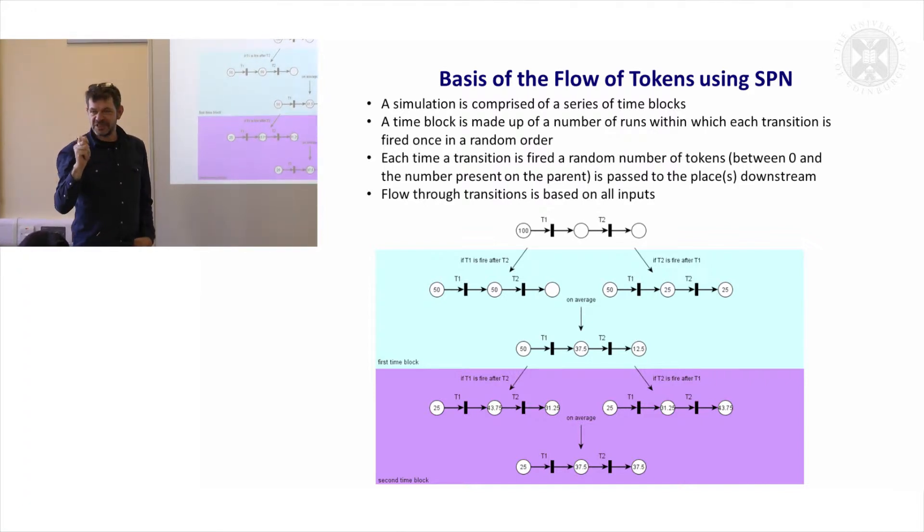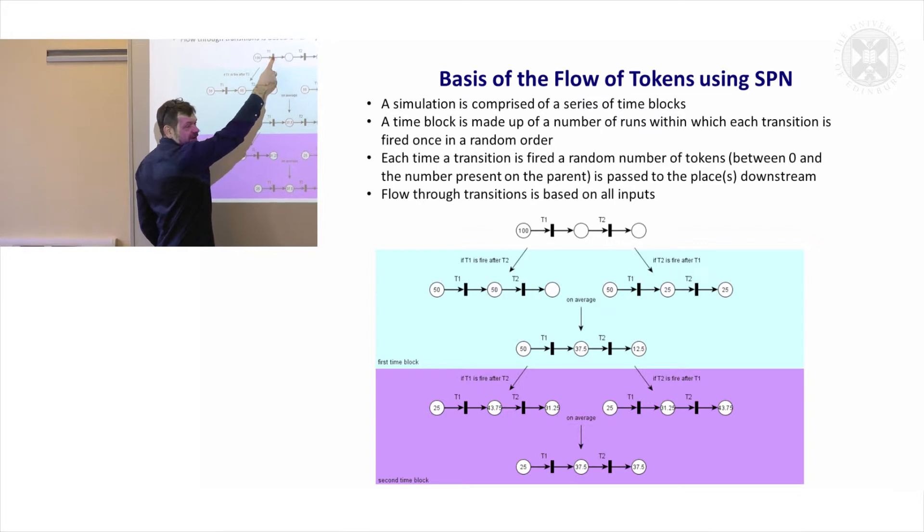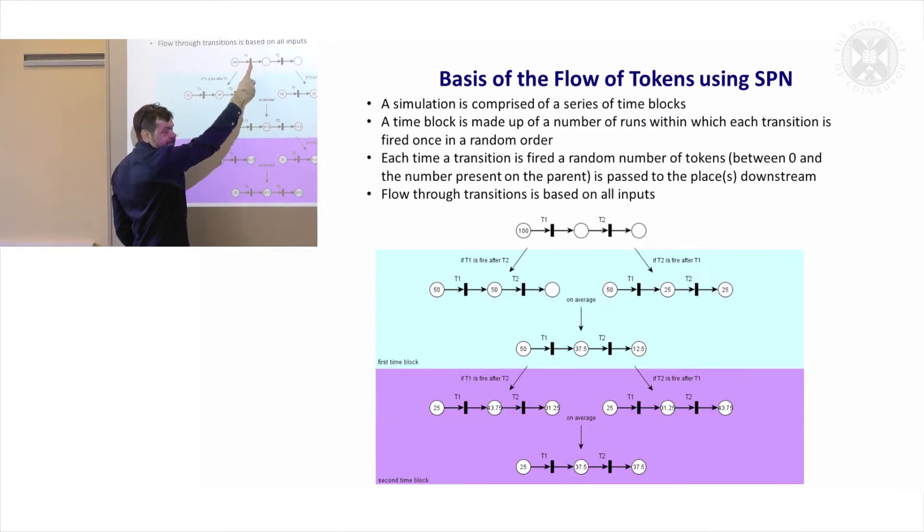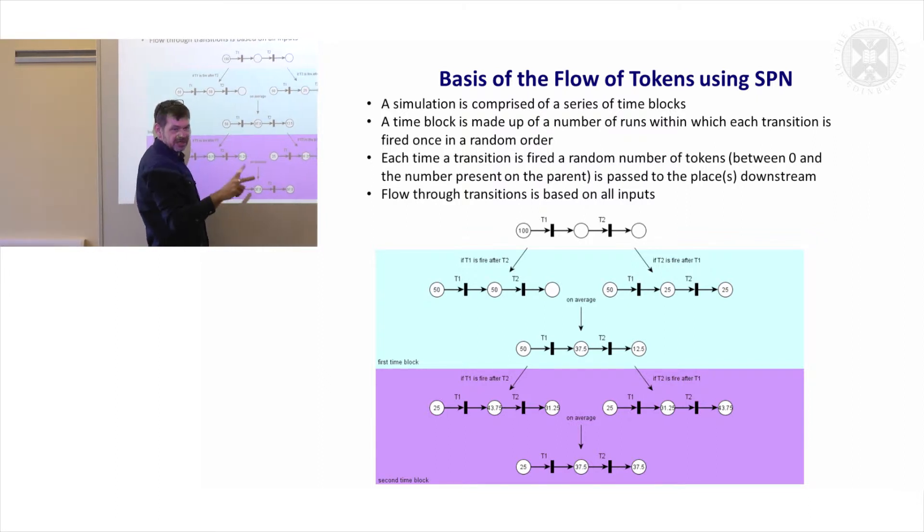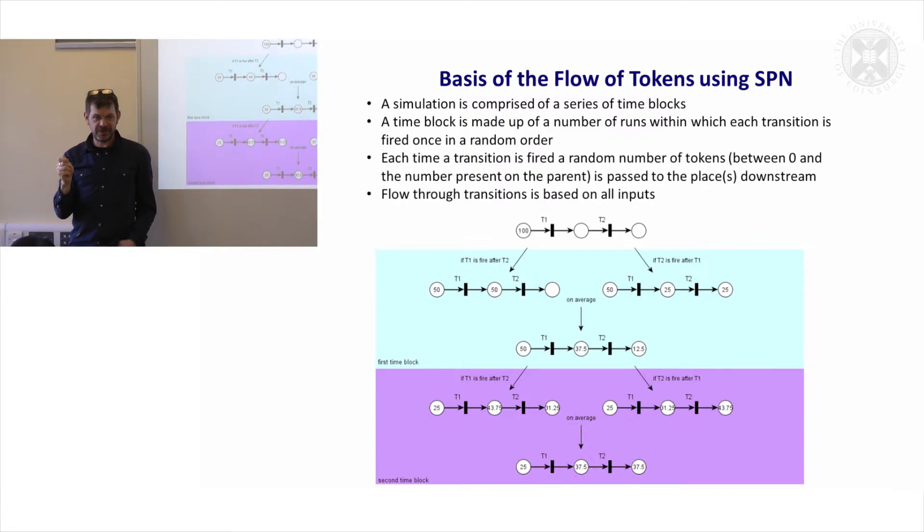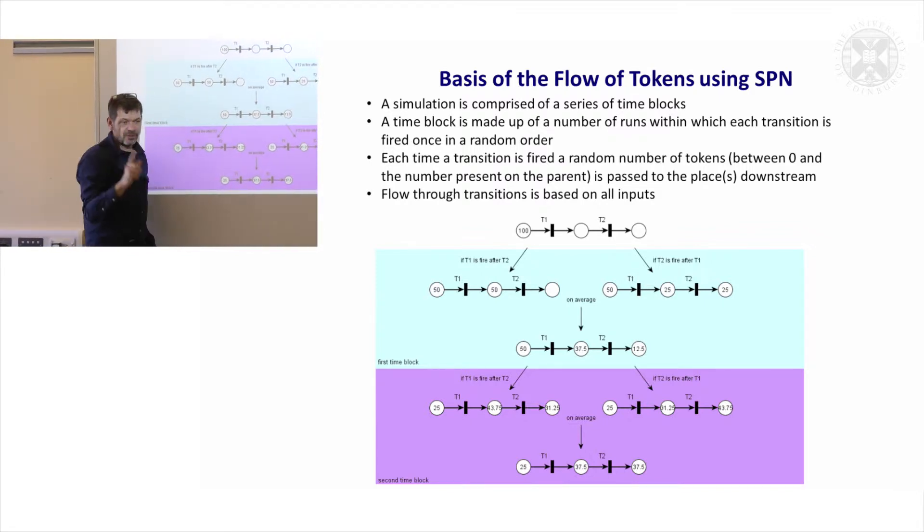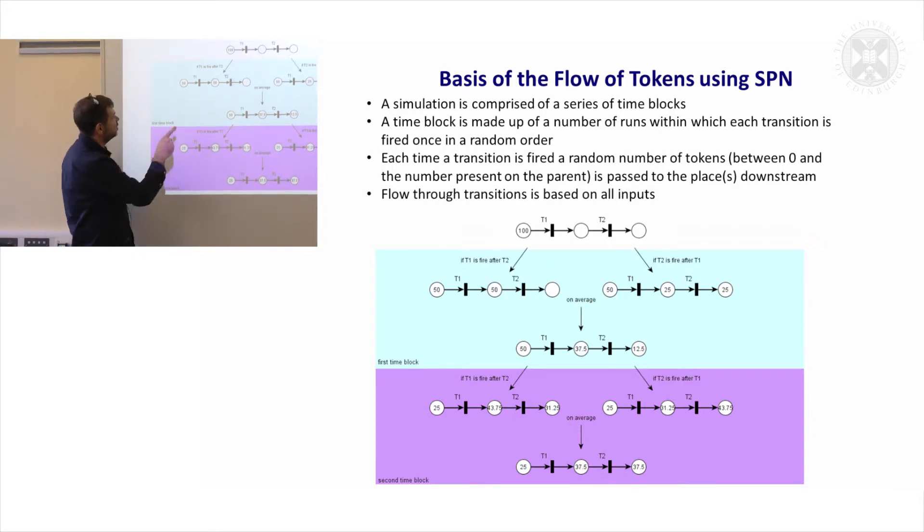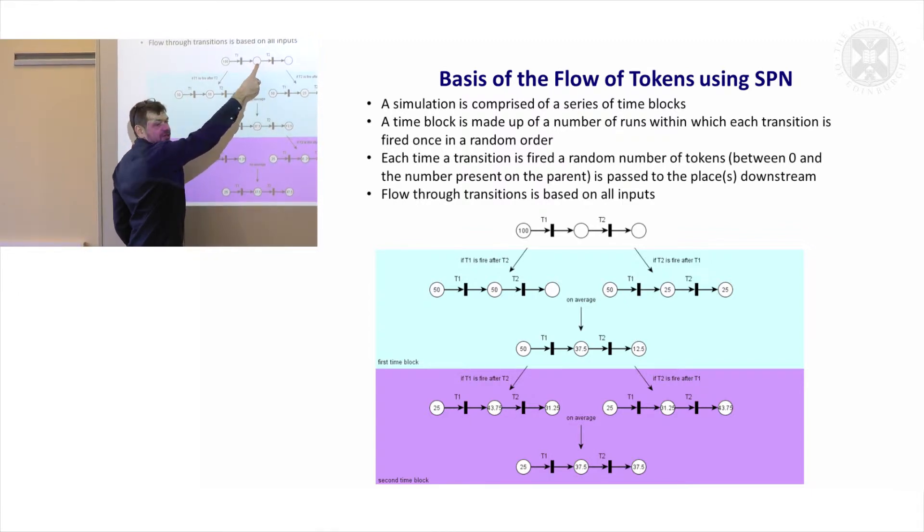But the way that the algorithm works is that a random number of tokens are going to move across. So a random number between 0 and 100 are going to move from there to there when this fires. Now, in this scenario, there is also a second possibility: the order in which transitions fire is also random. So T1 could fire first or T2 can fire first.